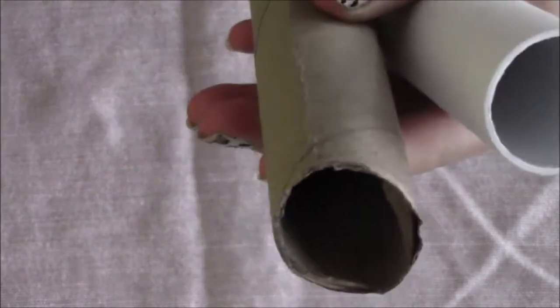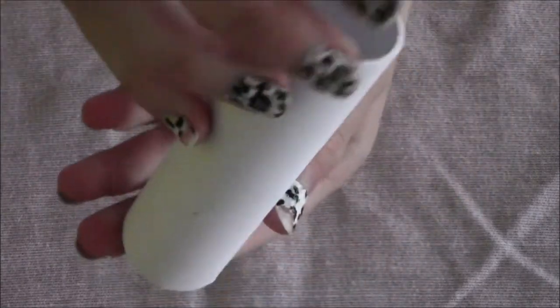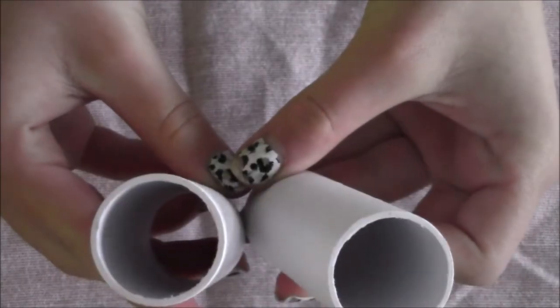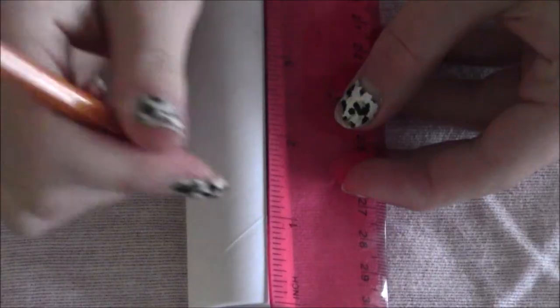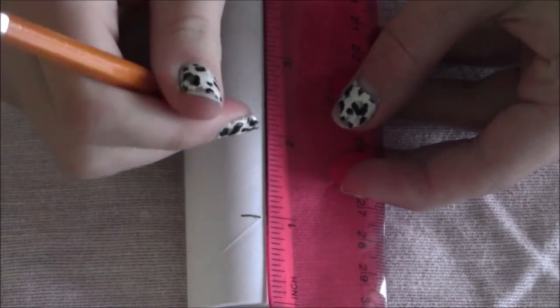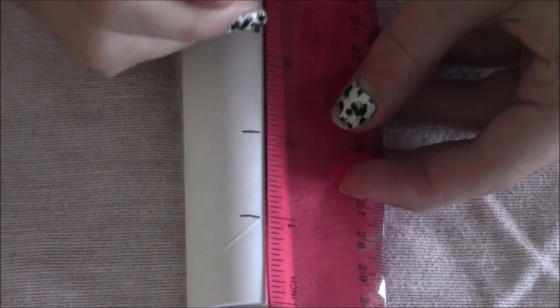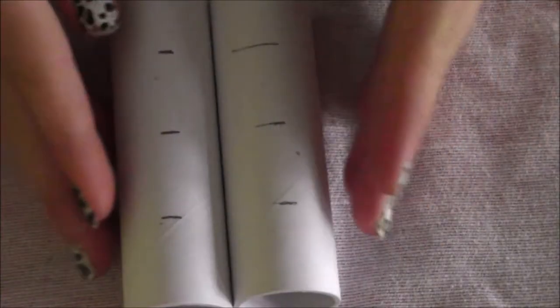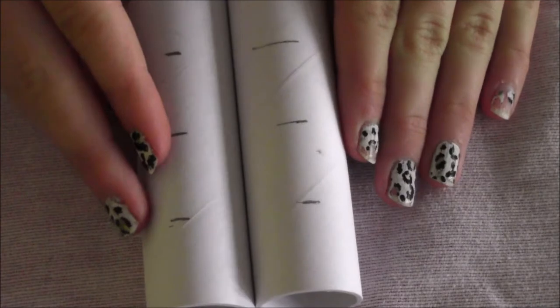So first you're going to pick your paper tube, make sure they are the same, you have two that are the same, and mine are actually from rolls of vet wrap. Then you're going to mark out three equal distance marks on both of them, like you can see what I have here.